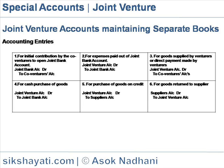Accounting Entries. For initial contribution by the co-venturers to open Joint Bank Account: Joint Bank Account Debit to Co-Venturers Account. For expenses paid out of Joint Bank Account: Joint Venture Account Debit to Joint Bank Account. For goods supplied by venturers or direct payment made by venturers: Joint Venture Account Debit to Co-Venturers Account. For cash purchase of goods: Joint Venture Account Debit to Joint Bank Account.